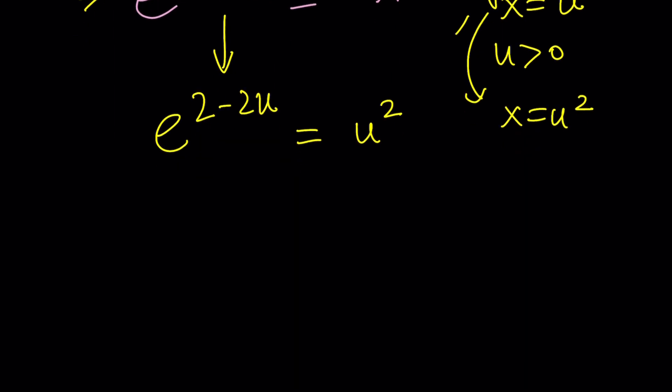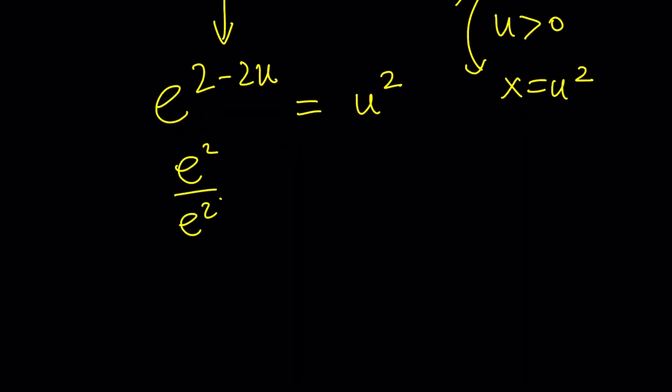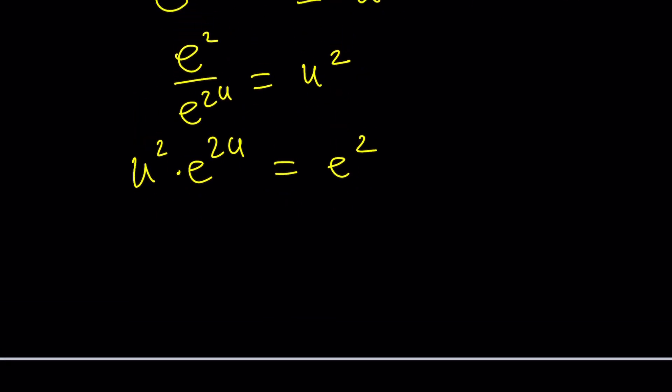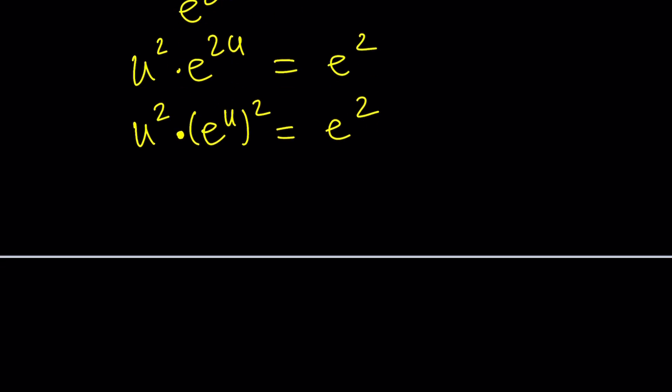So now we can do the following same idea. e squared divided by e to the 2u equals u squared and then cross multiply u squared times e to the power 2u equals e squared. You might be saying something like it's the same thing, you're just using substitution. Why do you present it as a second method? Well here's the thing. I'll do it differently. I can now write e to the 2u as e to the u squared. Notice that I have the product of two squares which I can write as the square of a product which is u times e to the u squared. This is where it becomes very different.